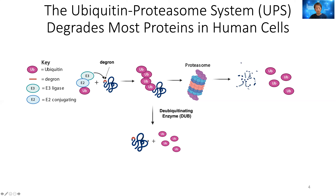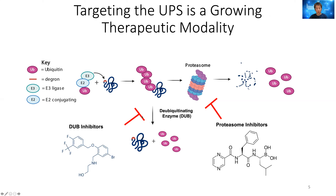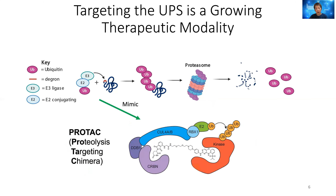In the drug discovery world, there have been drugs available. One is a proteasome inhibitor, which basically blocks the proteasome, preventing many proteins from being degraded. The other is a DUB inhibitor, which blocks DUB function, making proteins degraded faster. But what really got us very interested is a new type of drug called PROTAC.